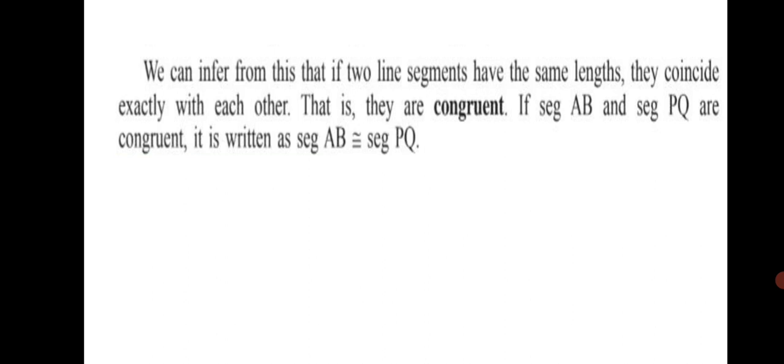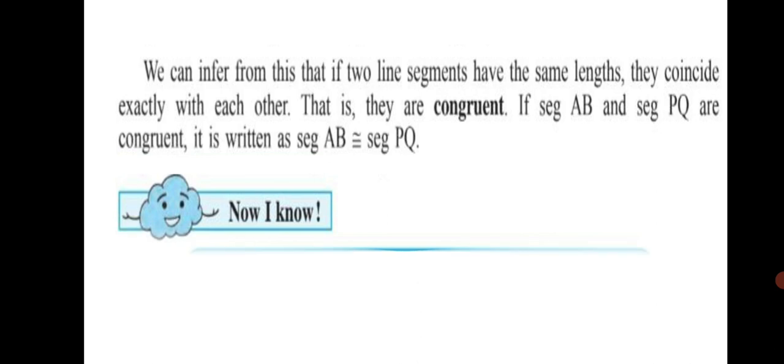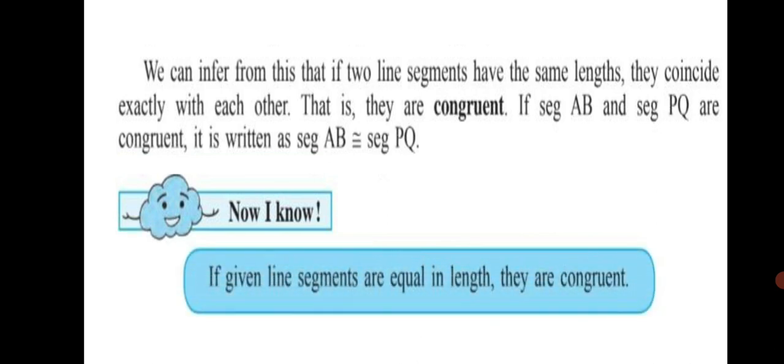If seg AB and seg PQ are congruent, it is written as seg AB congruent to seg PQ. This is the sign of congruence. Now you know, if given line segments are equal in length, they are congruent.